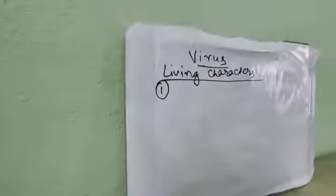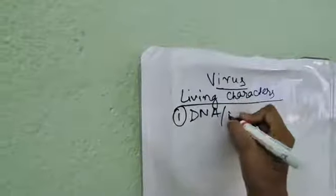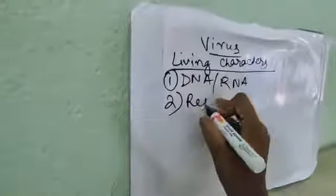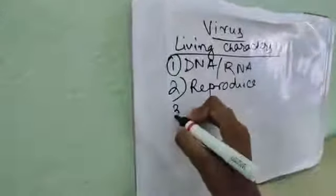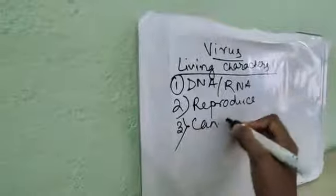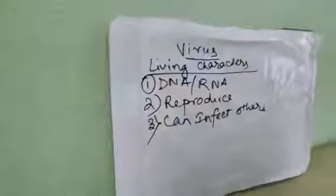Now we will move on to the living characteristics and non-living characteristics of viruses. There are three living characteristics of virus. First, presence of nucleoprotein — that means presence of DNA or RNA, which is generally found in living organisms. Second, it can reproduce within the host cell. Third, it can infect other living organisms.